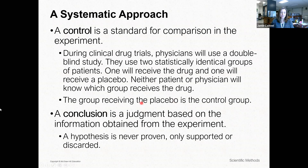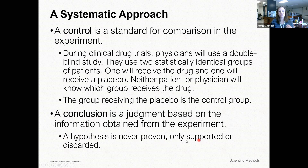The next thing you need to know about experimentation is a conclusion — a judgment based on the information obtained from the experiment. A hypothesis is never proven, only supported by your data or discarded because it doesn't support your data. You then find a new hypothesis and move forward. That's where we get to theories — they're never proven true, only potentially disproven.